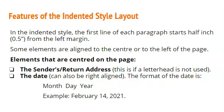Then we will have the date, and the date can also be right aligned. The format of the date is month, day, year, and this is similar to that of the semi-block style letter. The difference, however, is that it carries a full stop at the end. The example says February 14, 2021. If we were using the semi-block style, we would not have the full stop at the end.